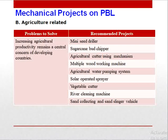The second area is agriculture. Sometimes there is an existing problem, or we can work to improve efficiency, performance, or proper utilization of resources. In agriculture, increasing agricultural productivity remains a central concern for developing countries. Some recommended agricultural projects include: a seed driller, sugarcane bud chipper or cutter, wood-working machines, a water pumping system, a solar-operated sprayer, vegetable cutters, river cleaning machines, and sand-collecting vehicles.